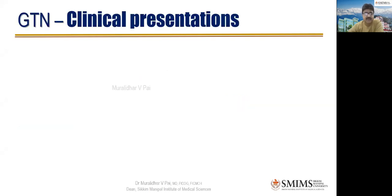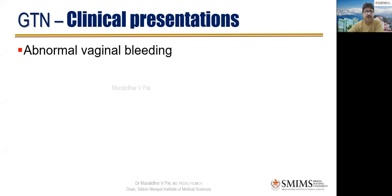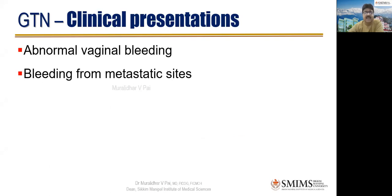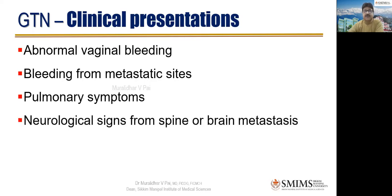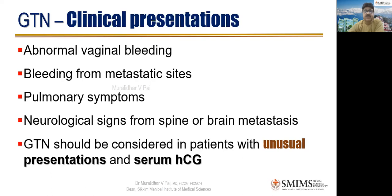Clinical presentations are not very different from those of complete or partial mole. Abnormal vaginal bleeding is the leading symptom in more than 90% of patients. Bleeding from metastatic sites is a newer symptom and can give rise to hemoptysis and other localizing symptoms. Pulmonary symptoms and respiratory distress may occur due to lung metastasis. Neurological signs from spine and brain metastasis are very distressing and point towards malignant GTN. GTN should be considered in patients with unusual presentations — check serum beta-hCG if elevated.